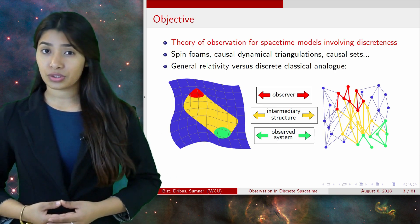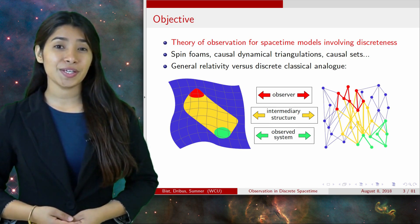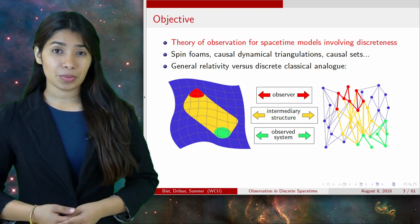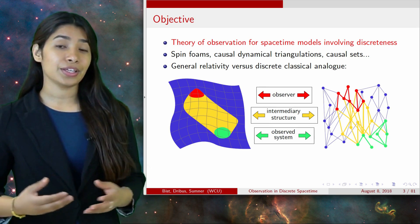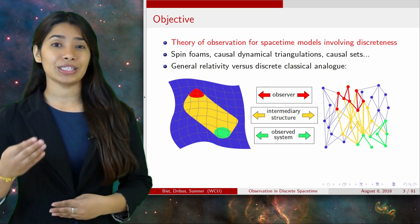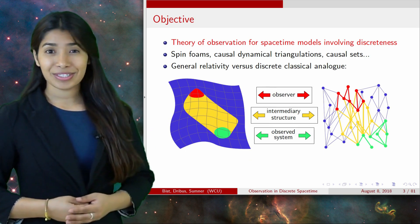The red region represents the observer or at least the location of the observer. The green region represents the observed system. And the yellow region represents the information flow between the two.